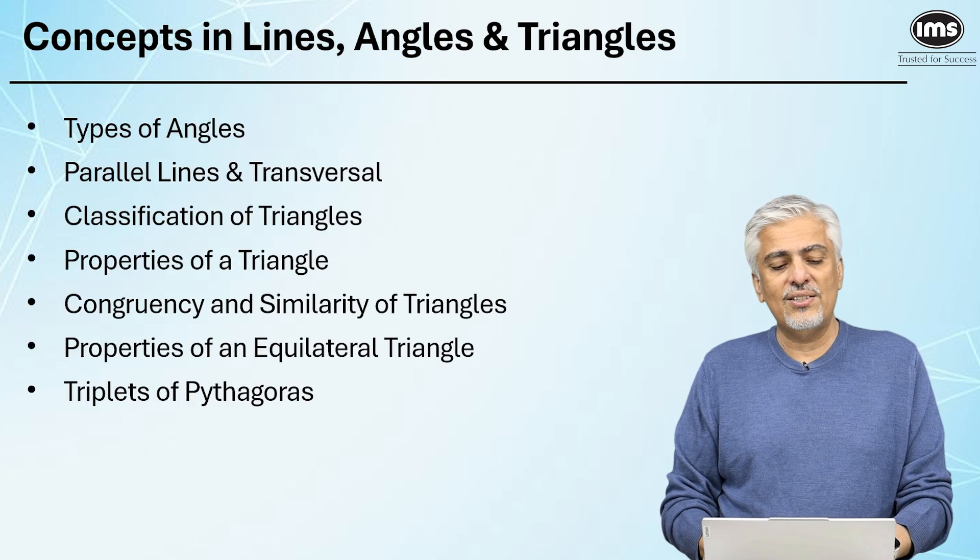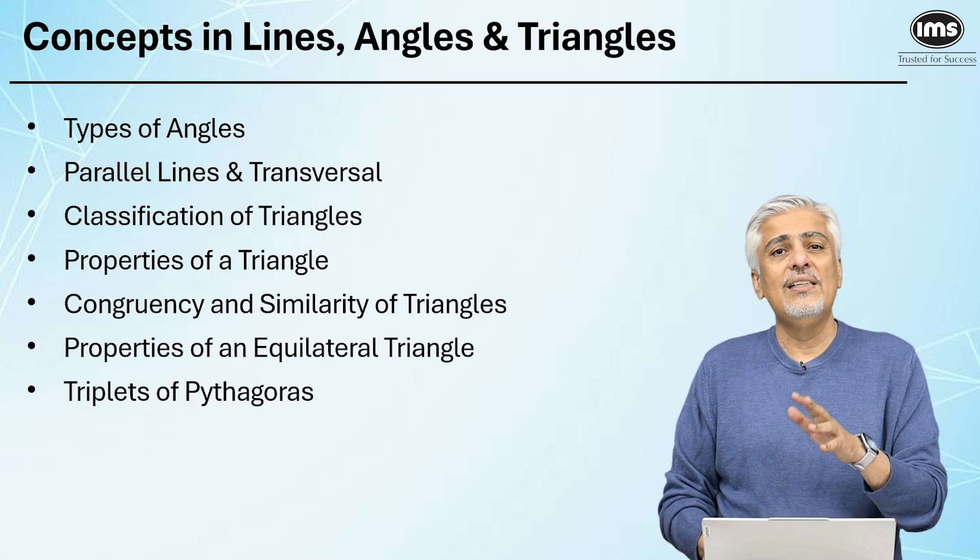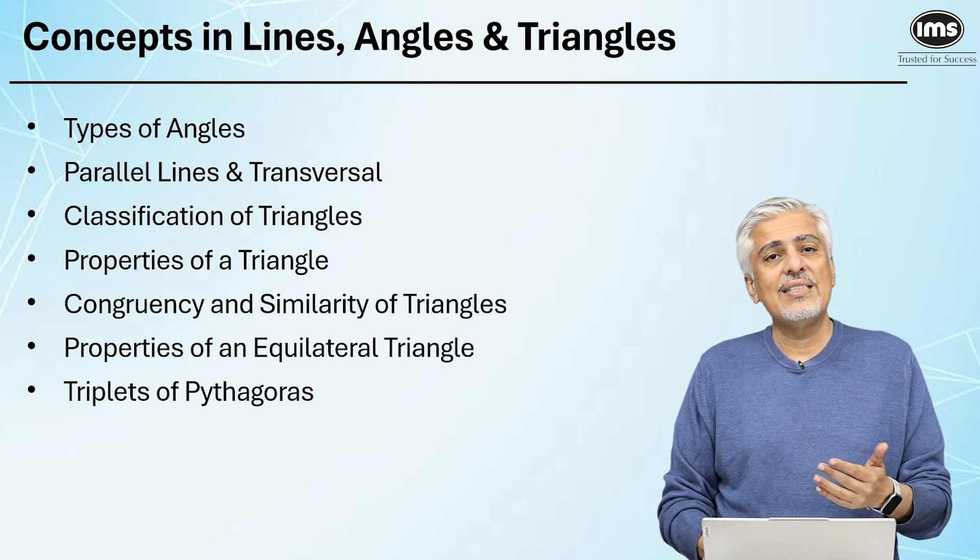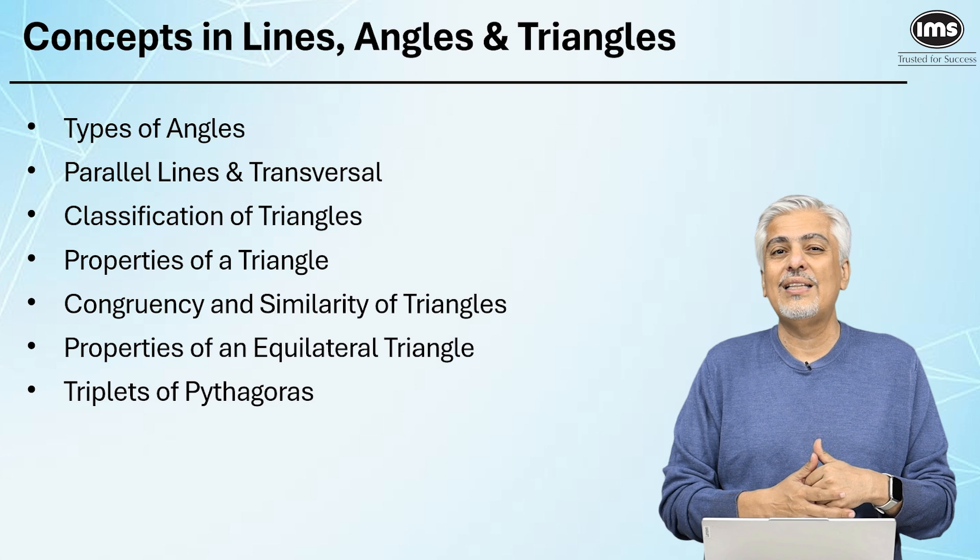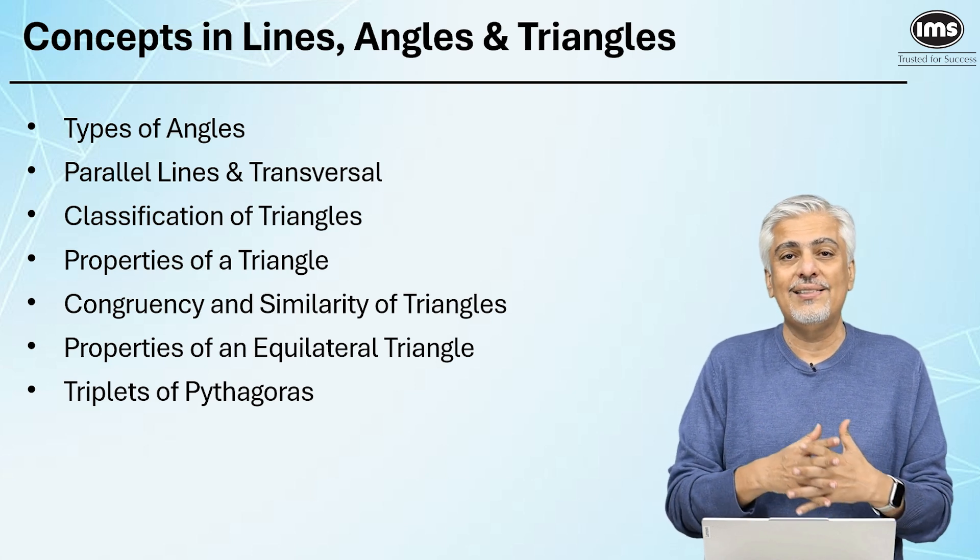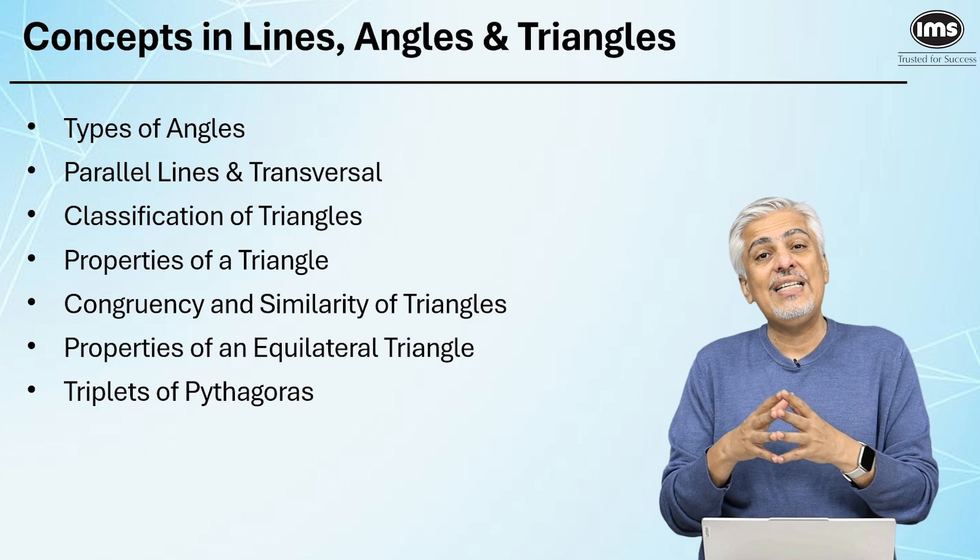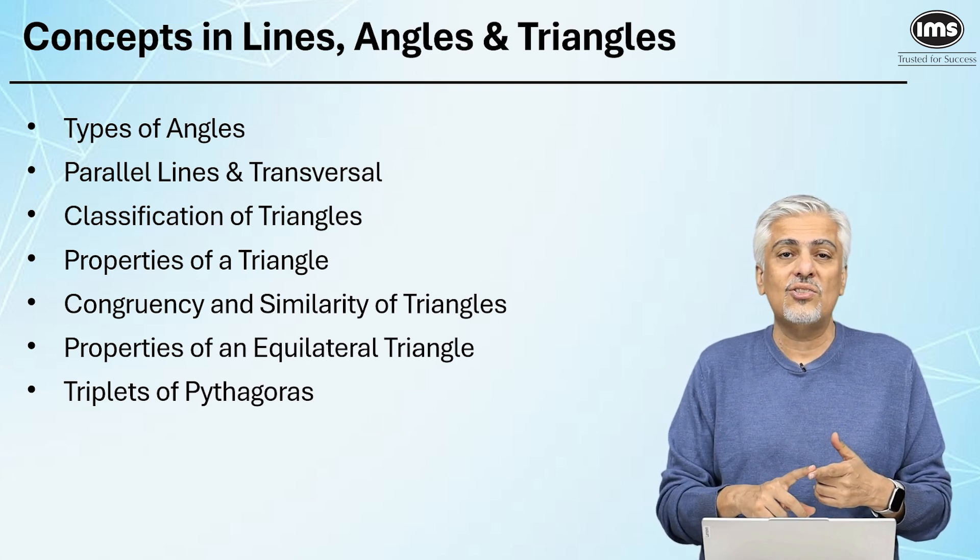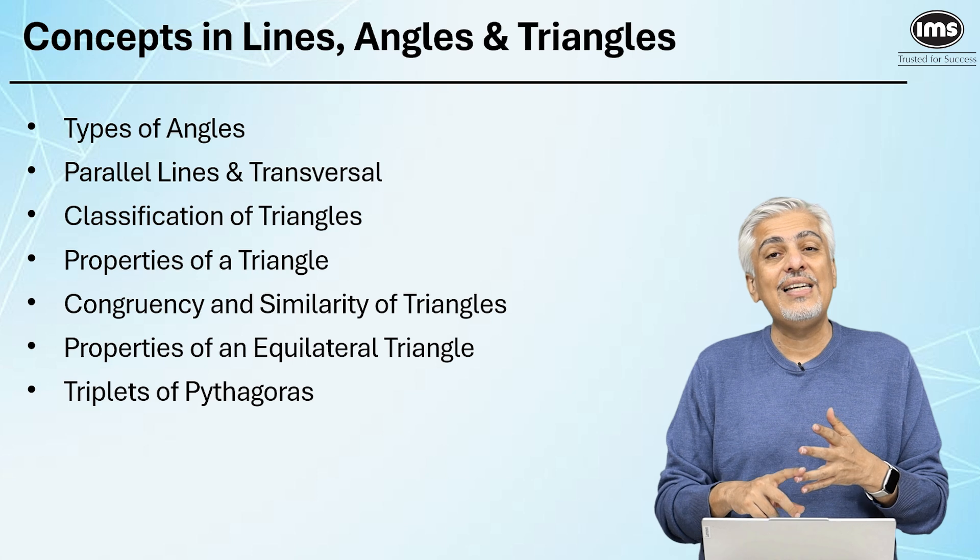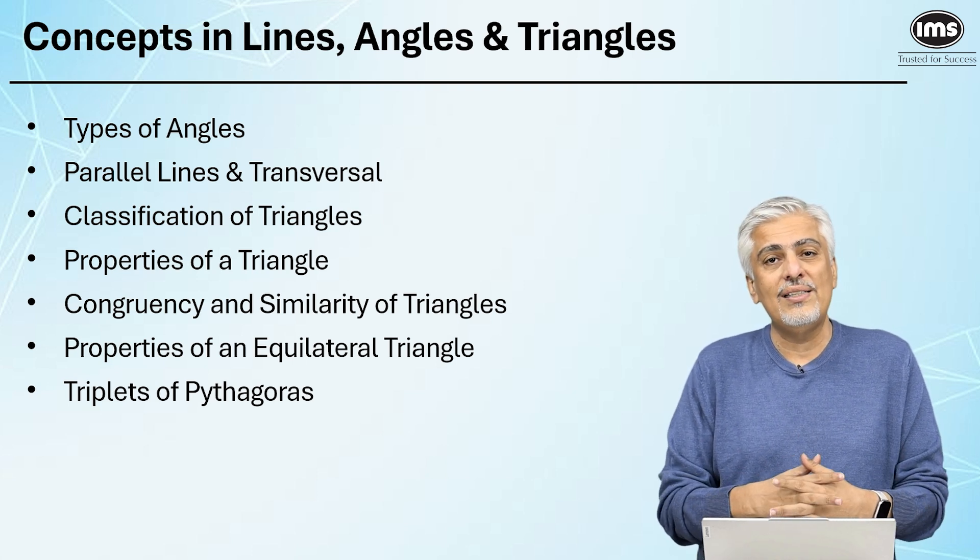Concepts in lines, angles and triangles. Obviously, what are the types of angles: acute angle, right angle, obtuse angle and so on. Parallel lines and transversal, what kind of angles are formed when two parallel lines are cut by a transversal, like the corresponding angles, alternate angles and so on. Classification of triangles based on sides and angles. Based on sides can be an isosceles triangle, an equilateral triangle or a scalene triangle. Based on angles, it can be right angle triangle, acute angle triangle and so on.